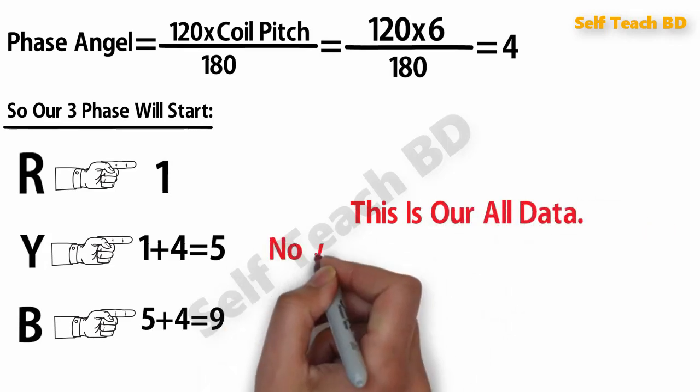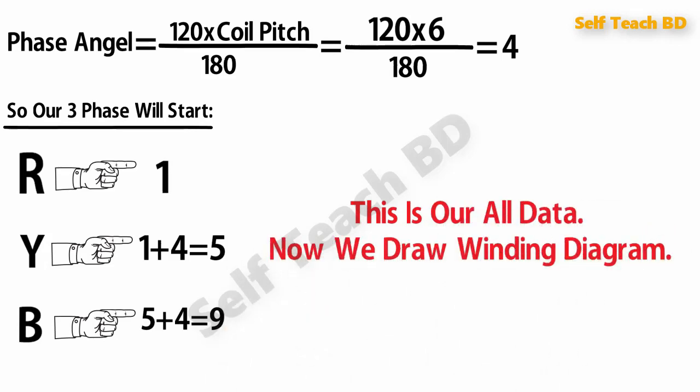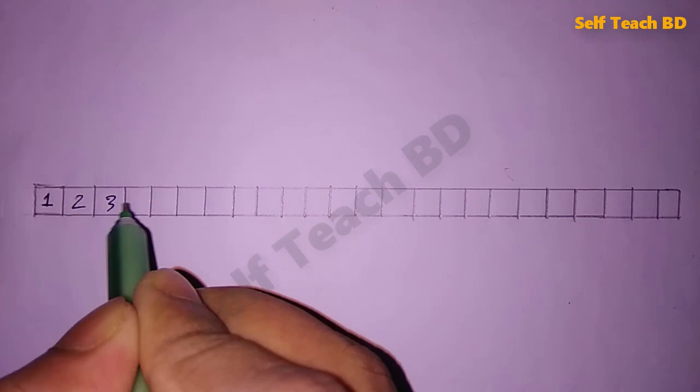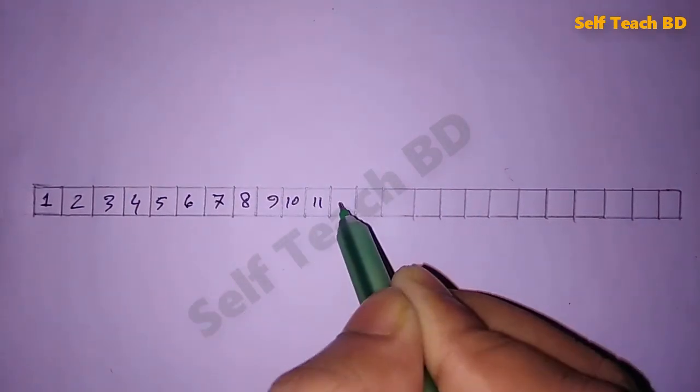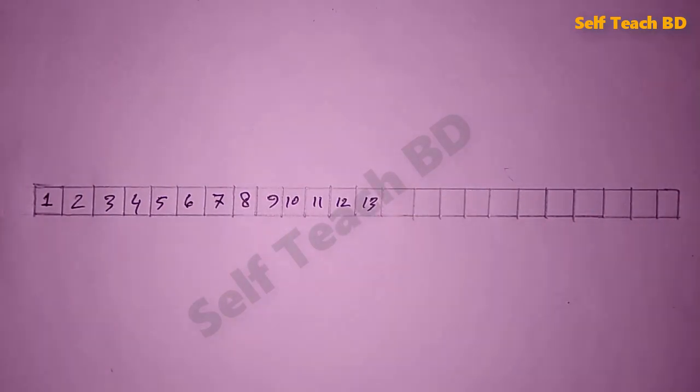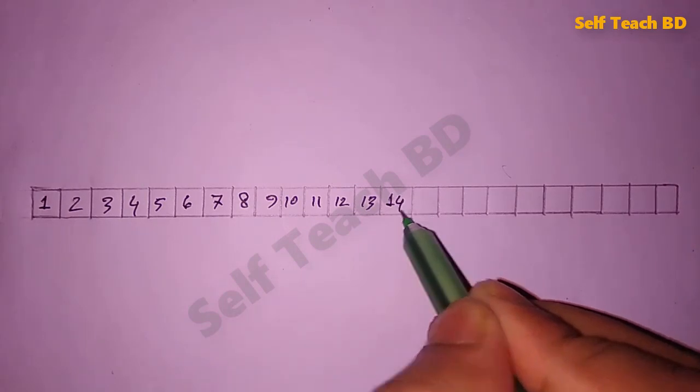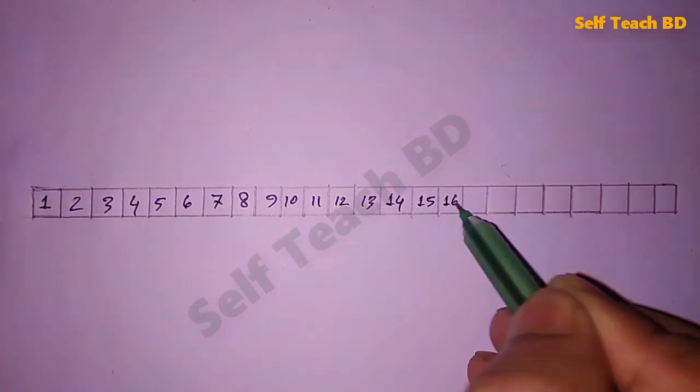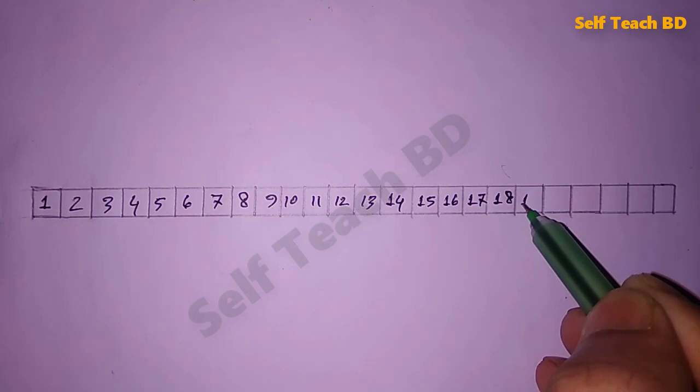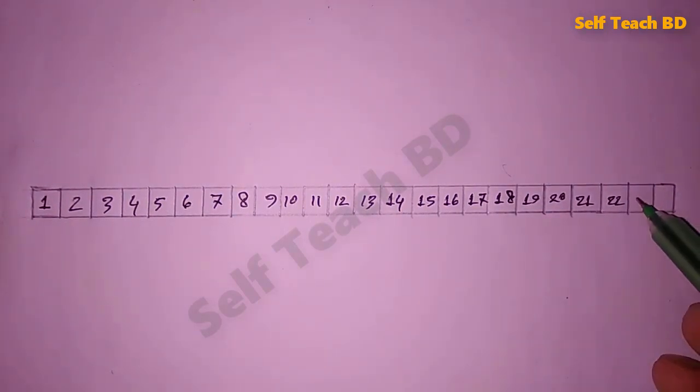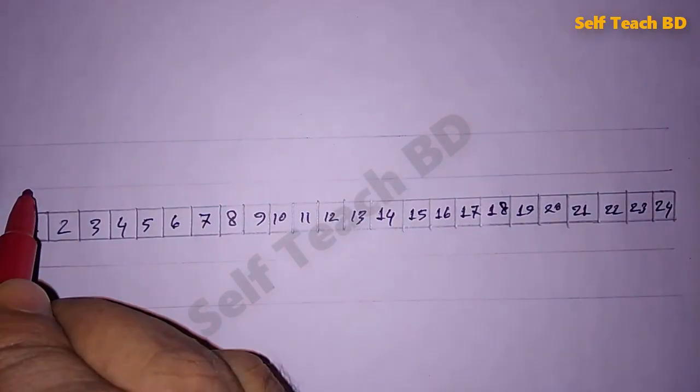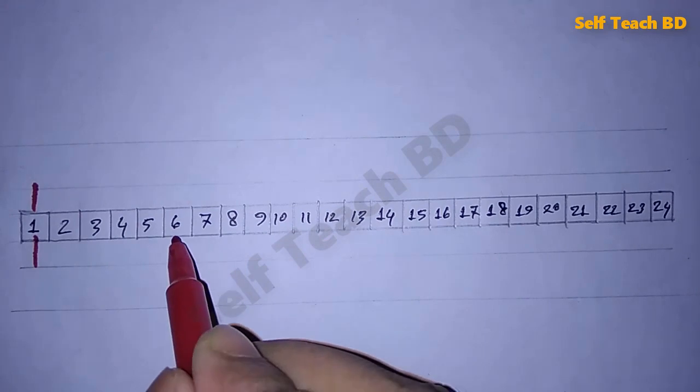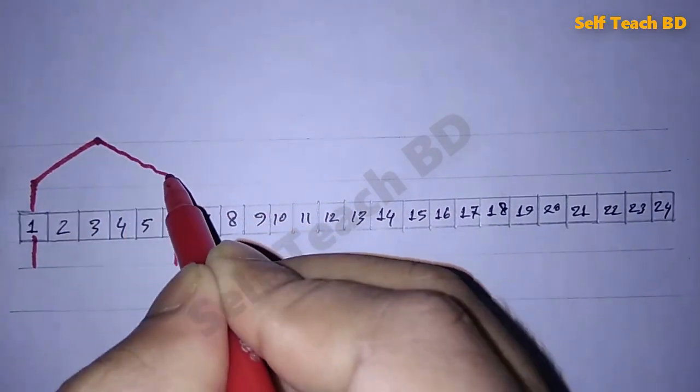So this is our all data. Now we are drawing winding diagram. Here our slot is 24, so 5, 6, 7, 8, 9, 10, 11, 12, 13, 14, 15, 16, 17, 18, 19, 20. We draw 24 slots. Our coil piece is 6, coil per phase is 4.